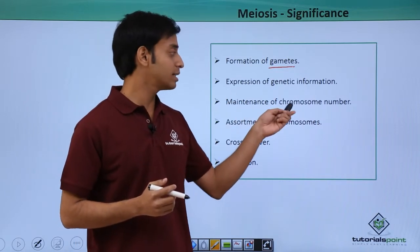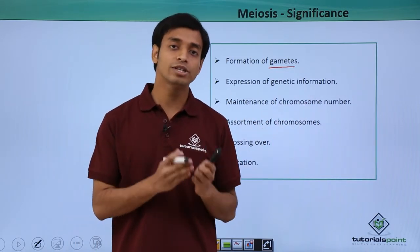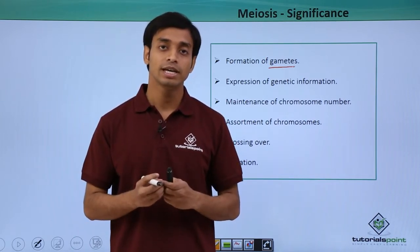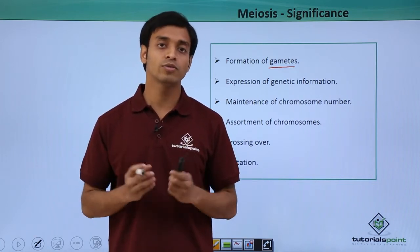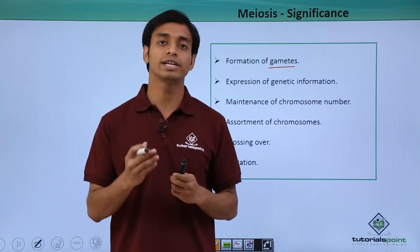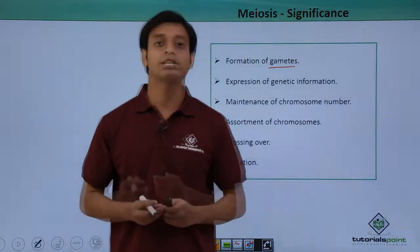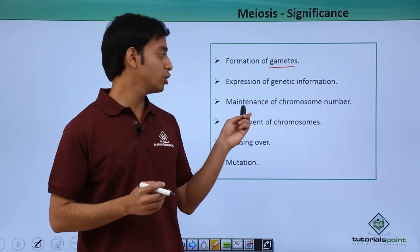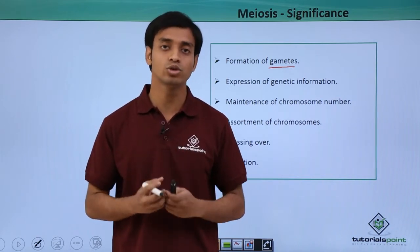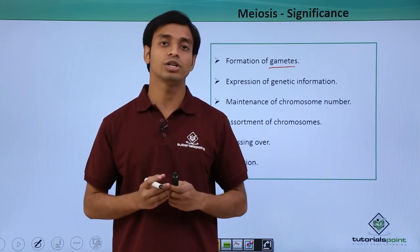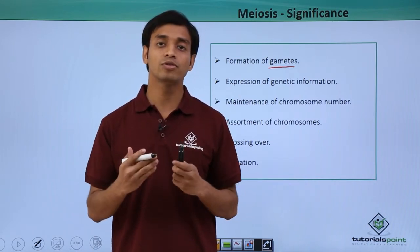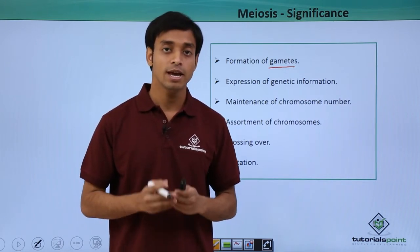Meiosis also maintains the chromosome number. During sexual reproduction there is fusion of male and female gametes. If meiosis did not occur, each time cells fuse during sexual reproduction the number of chromosomes would increase. We know the chromosome number is maintained in sexual reproduction — the male and female gametes fuse together. Without meiosis, each time these cells fused the number of chromosomes would have increased.